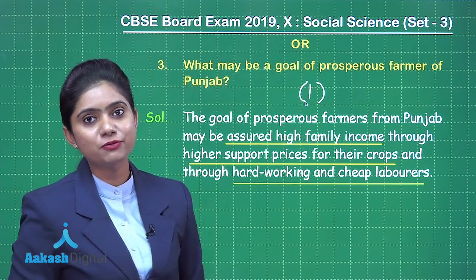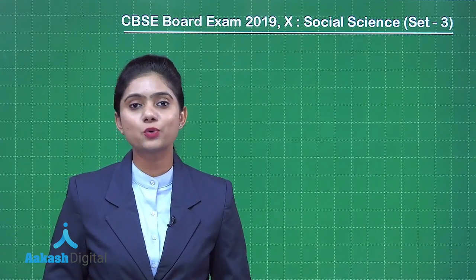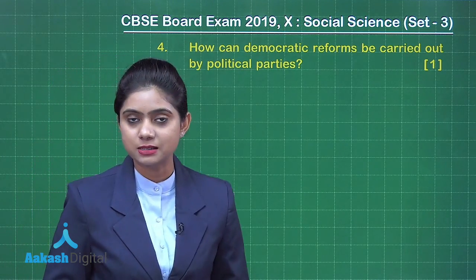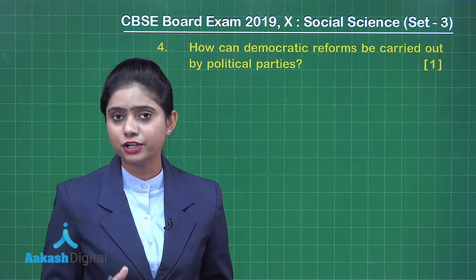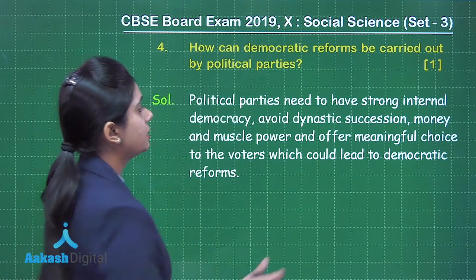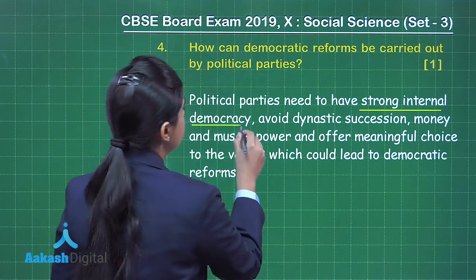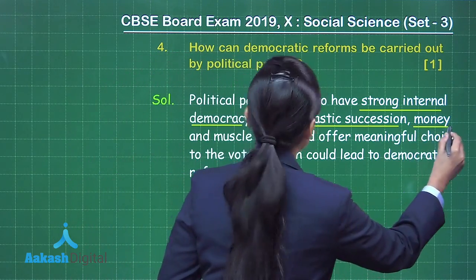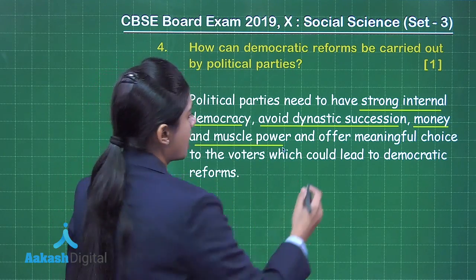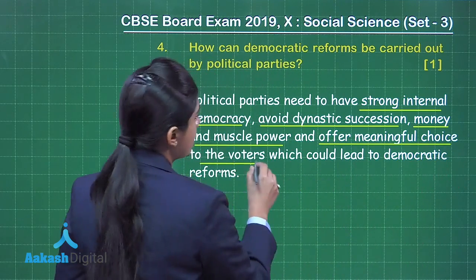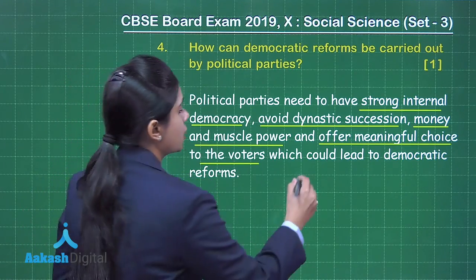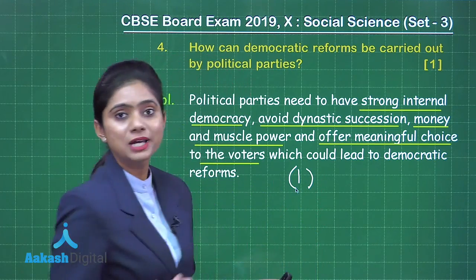Question number 4: How can democratic reforms be carried out by political parties? Political parties need to have strong internal democracy, avoid dynastic succession, avoid money and muscle power — a very important issue these days — and offer meaningful choice to voters. These steps could lead to democratic reforms, and this answer will help you get one mark.